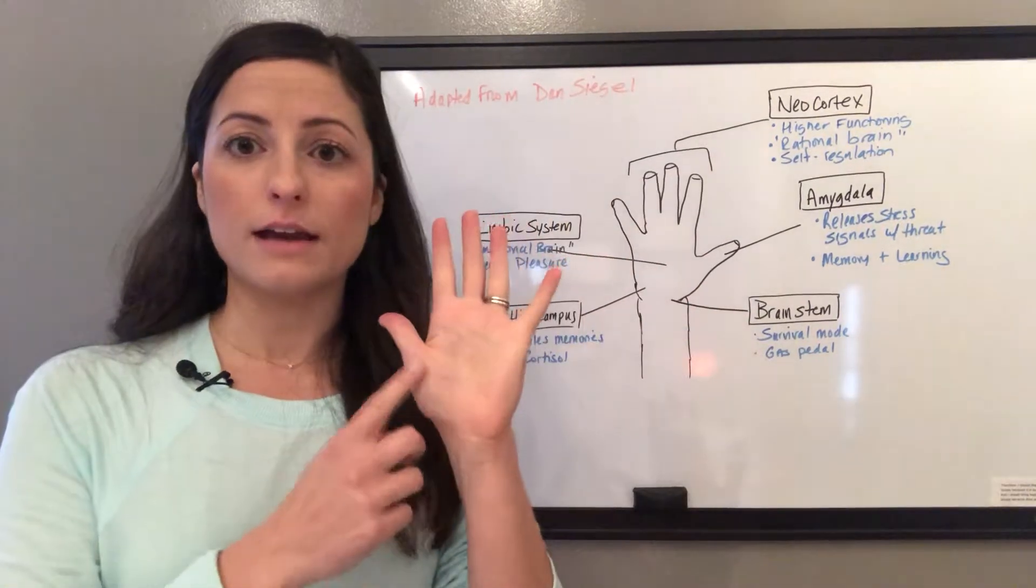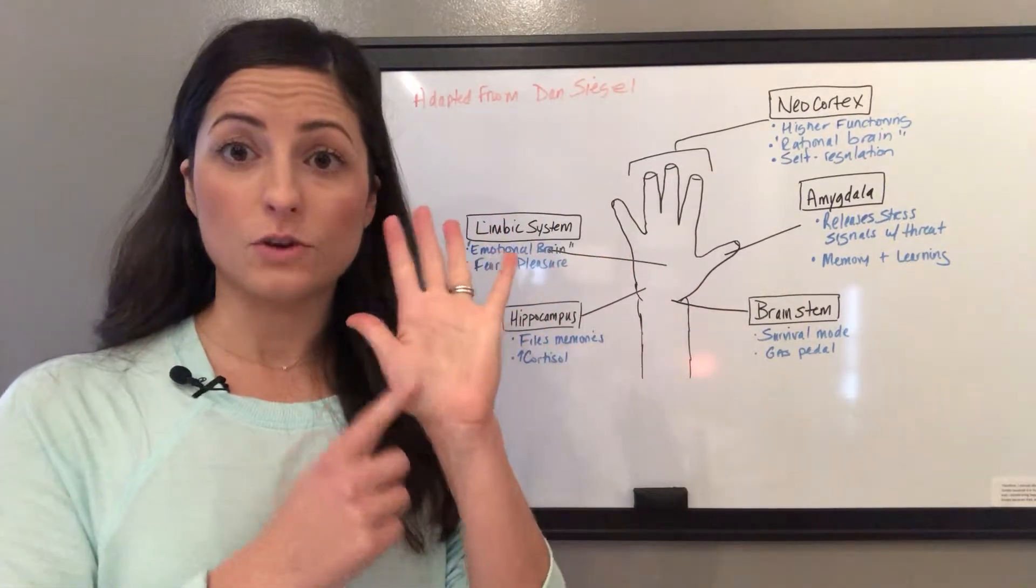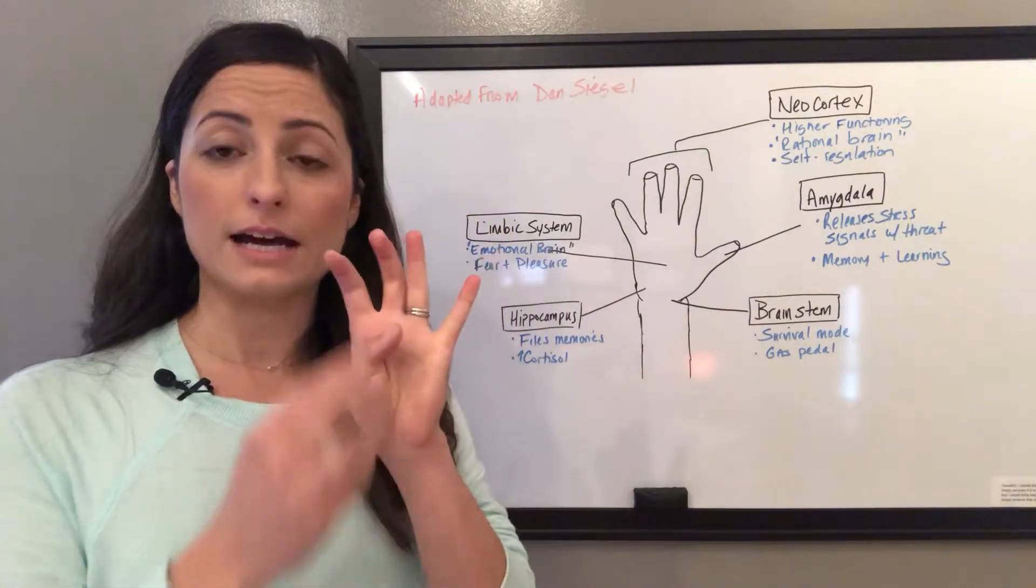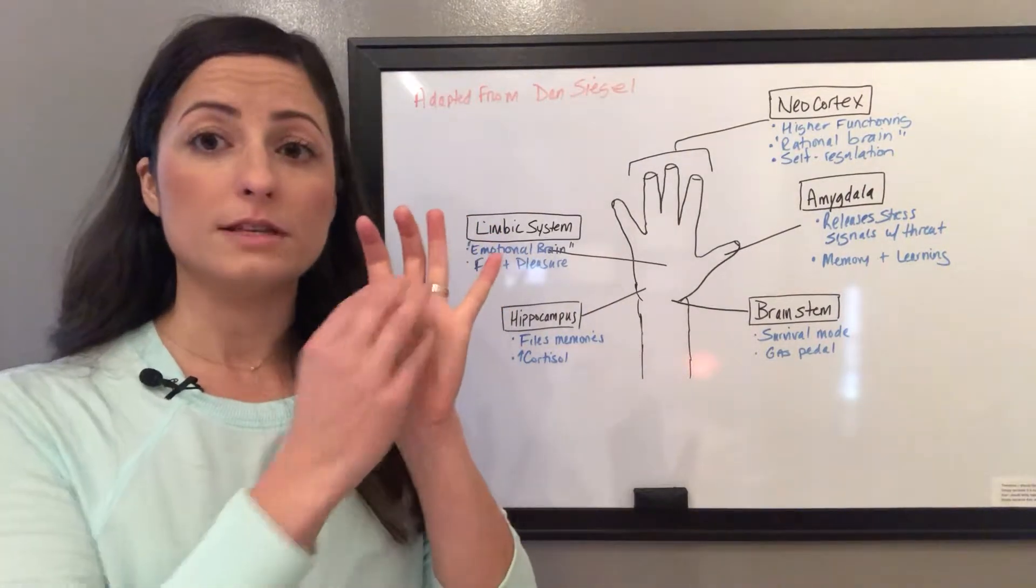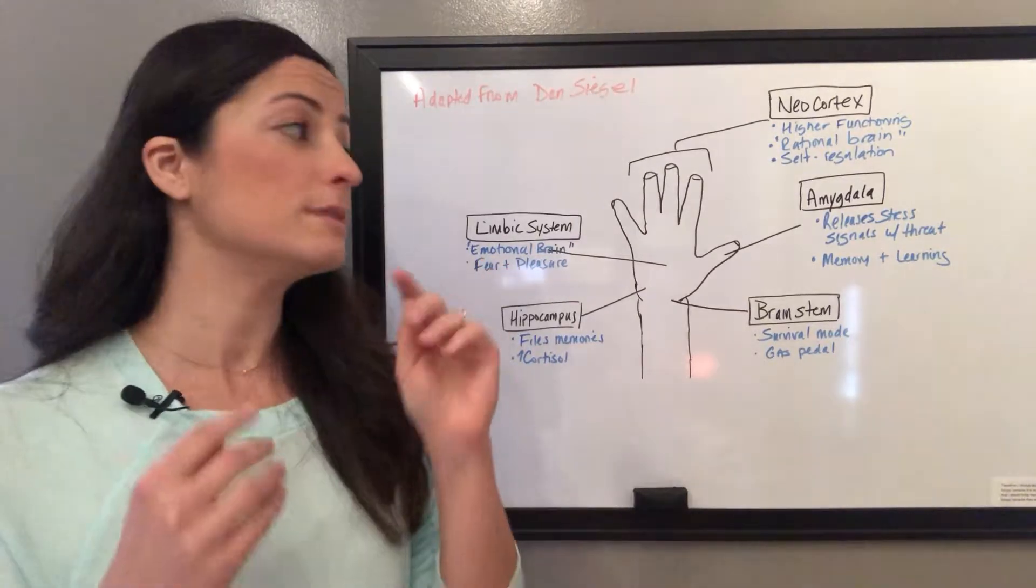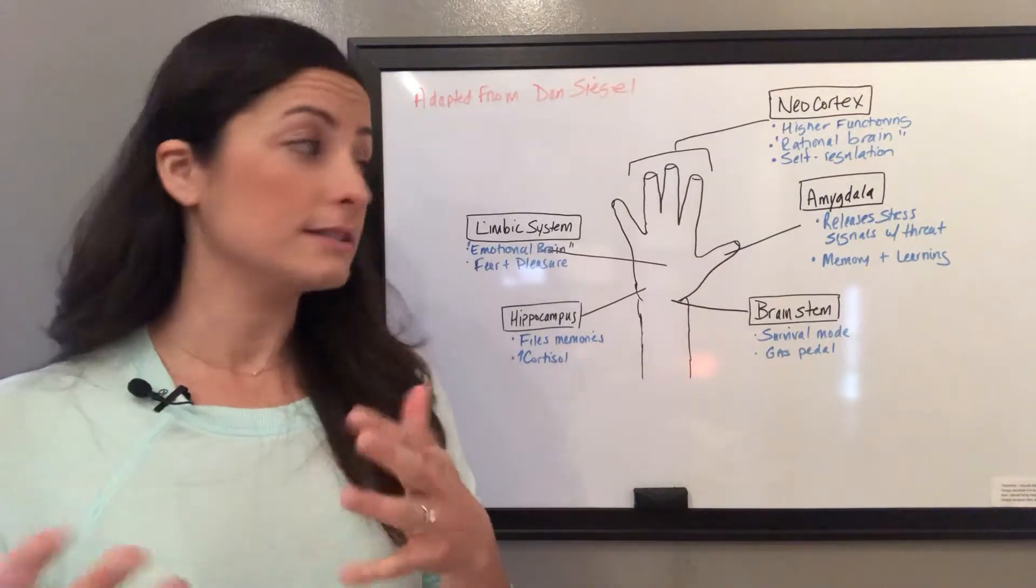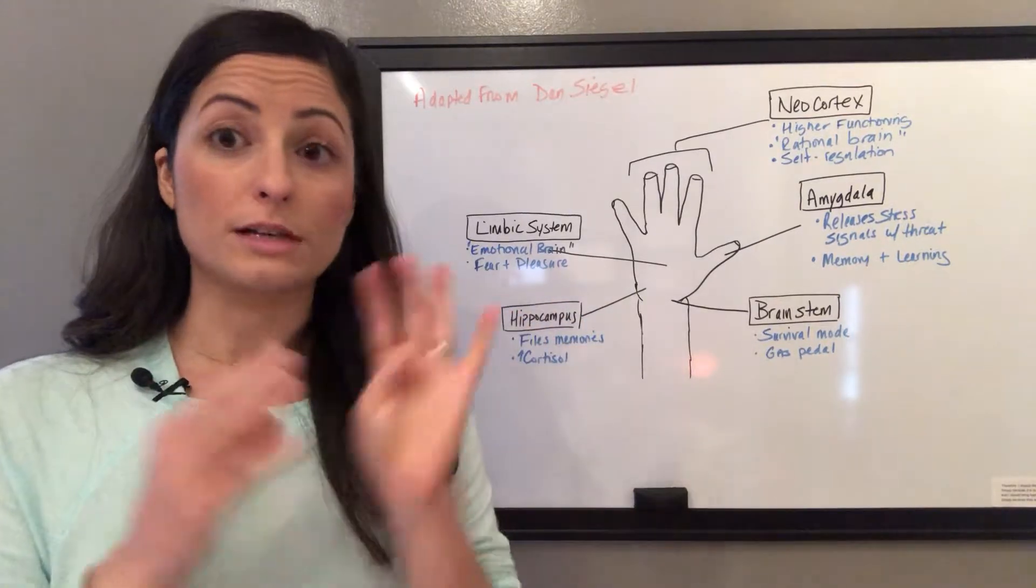The thumb area is the amygdala, a part of the brain that sits deep within. If you put your thumb inside the palm like that, that would be the amygdala cradling some of these deeper structures. The amygdala releases stress signals when you're feeling threatened and is also responsible for memory and learning.